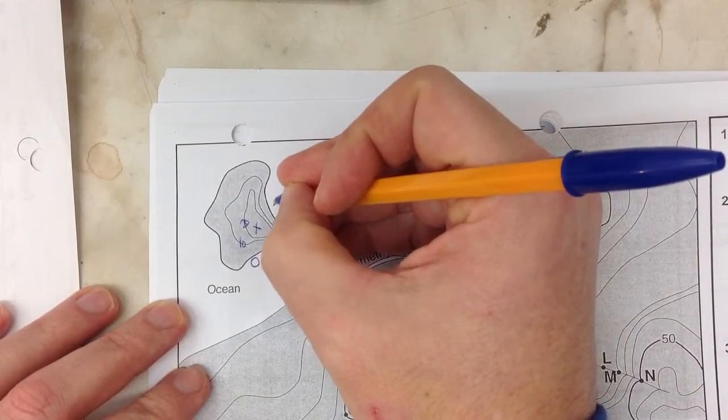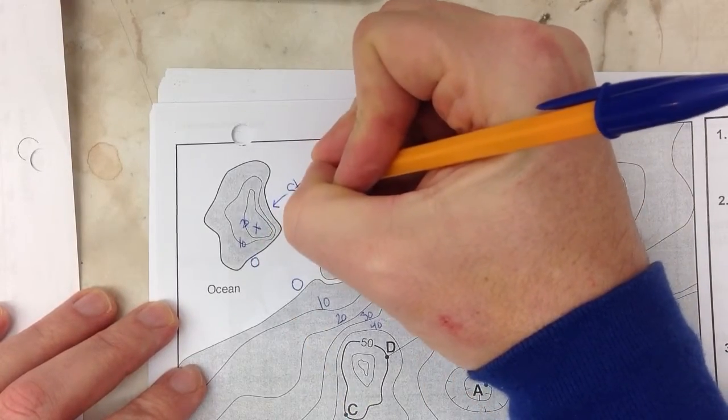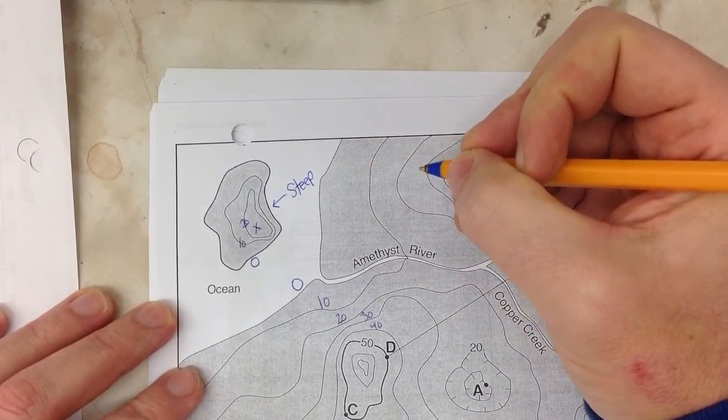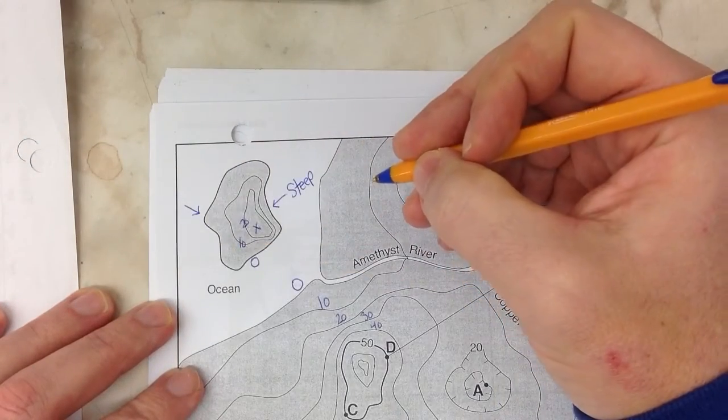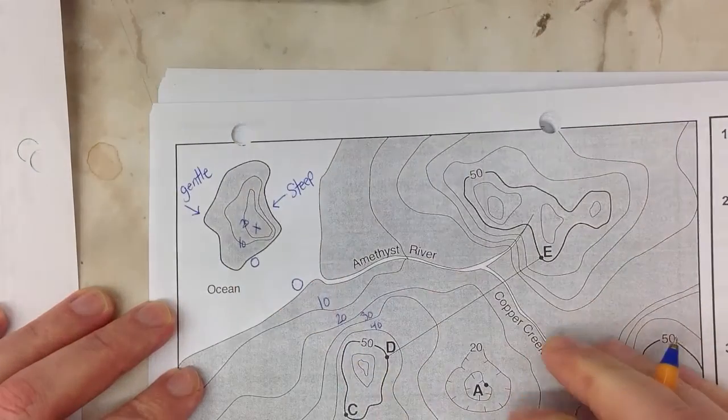You'll notice over here on the eastern side of the island, the lines are close together. That just means it's really steep. When your contour lines are close together, you have what's called a steep gradient. You'll notice that the contour lines on the west are far apart. That means you have a very gentle gradient or relatively flat.